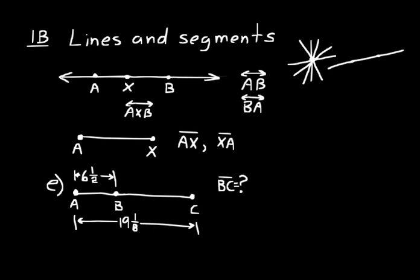Now look at practice problem E. I have a line segment drawn there, line segment ABC. I show that the distance from A to B is 6 1/2 units. We didn't give it any length units like inches or feet or miles, so we'll just say it's 6 1/2 units from A to B. I also gave the distance from A to C of 19 1/8 units. I want you to figure out the distance from B to C. You know the total distance from A to C, subtract out the distance from A to B. We're going to have to do a subtraction problem. So we will say 19 1/8 minus 6 1/2.